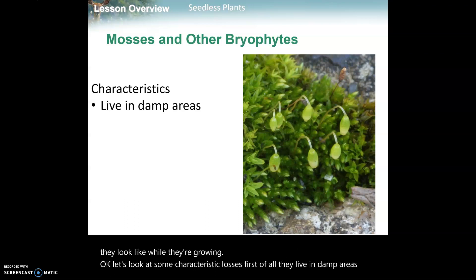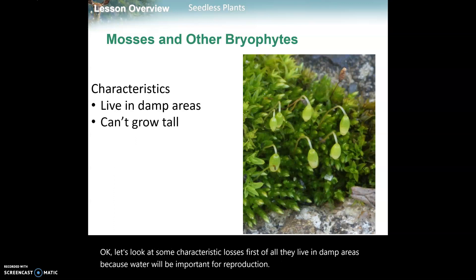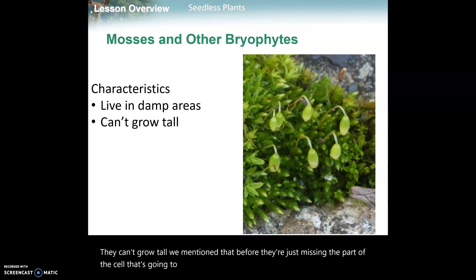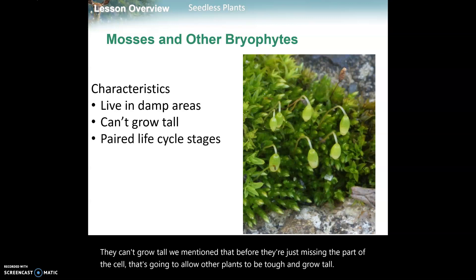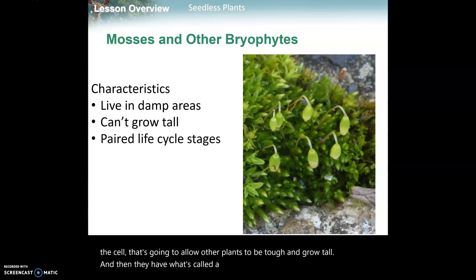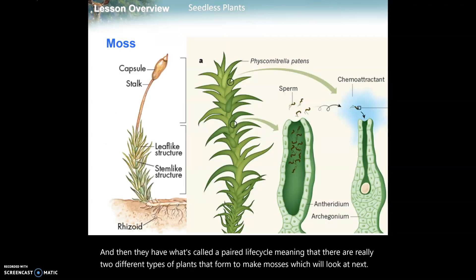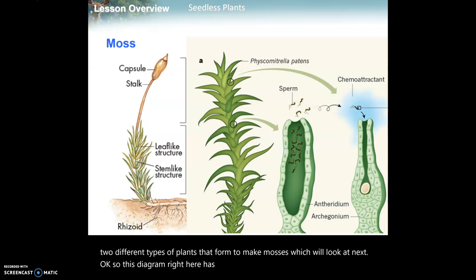Characteristics of mosses: they live in damp areas because water is important for reproduction. They can't grow tall - they're missing the part of the cell that allows other plants to be tough and grow tall. And they have what's called a paired life cycle, meaning there are really two different types of plants that form to make mosses.